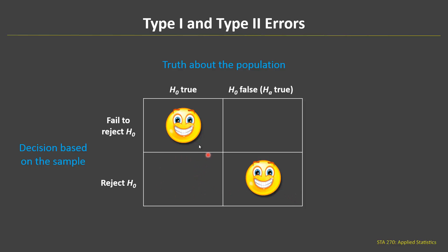If the null hypothesis is true and we reject it, we've made an incorrect decision. The null hypothesis was true, but we rejected it, saying that it was false — we've made an error. We rejected the null hypothesis when the null hypothesis was in fact true. That's called a type 1 error: reject the null hypothesis when in fact the null hypothesis is true.